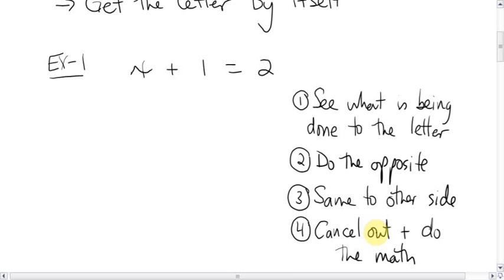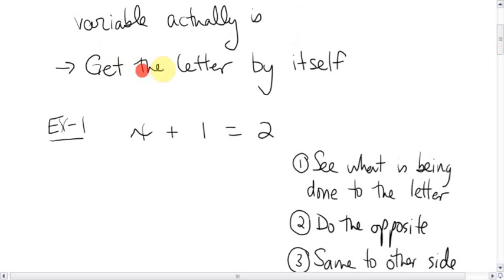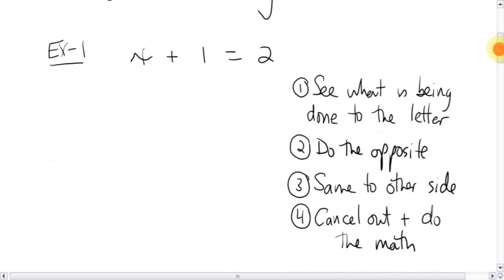First off, the whole goal of algebra and equations is you want to get the letter by itself. I want to get this x all by itself. But this plus 1 is in the way. So in our four-step program here, we first want to see what is being done to the letter. The letter is being added by 1. To get rid of it, we do step 2 - we do the opposite of what it is doing to the letter. So this is adding 1, we will do the opposite, which is subtract 1.